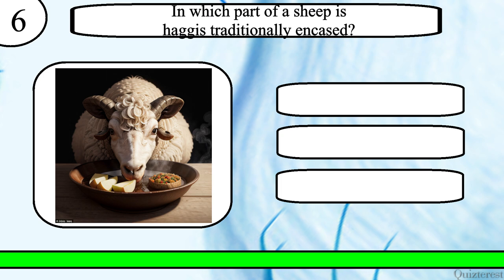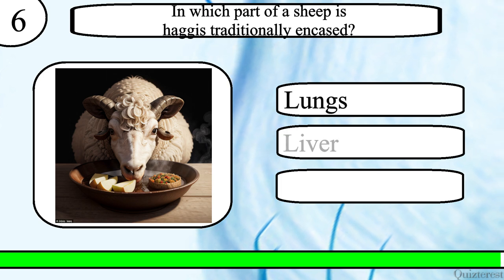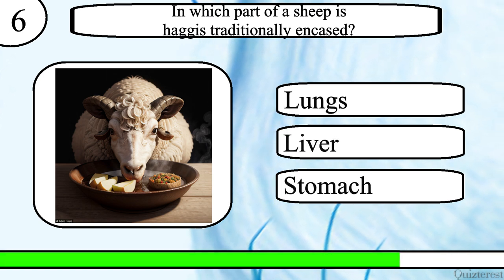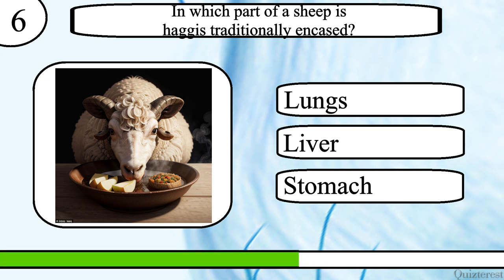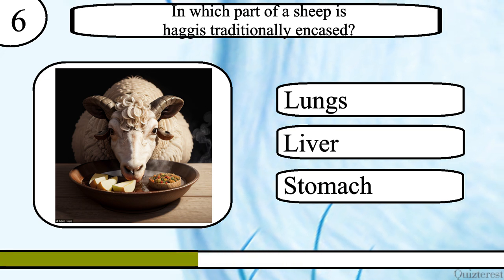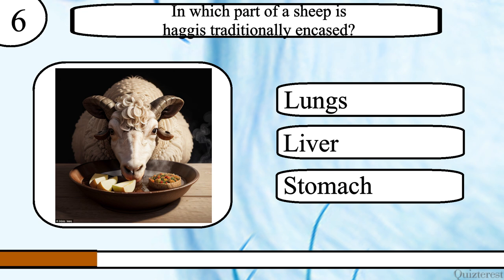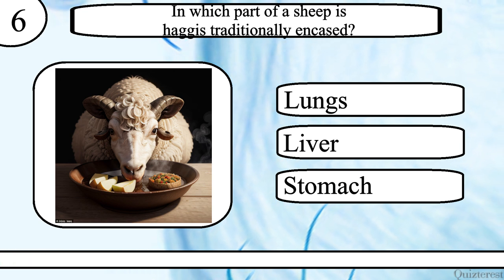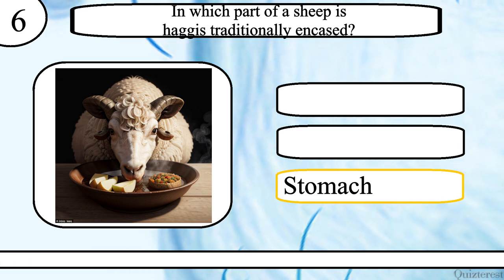Which part of a sheep is haggis traditionally encased? Lungs, liver or stomach? The correct answer is stomach.